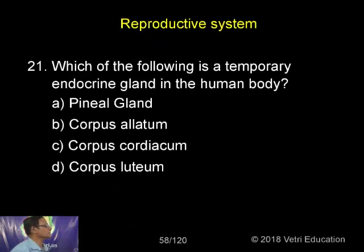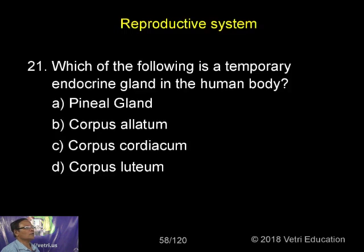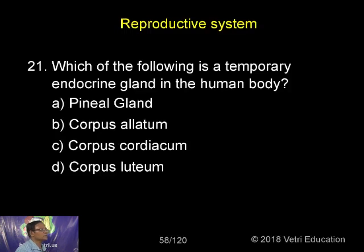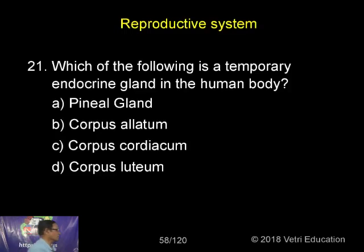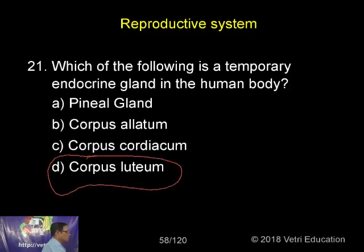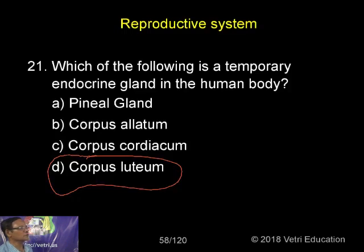Which of the following is a temporary endocrine gland in the human body? If pregnancy occurs, the empty follicle in the ovary gets converted into a transitory or temporary endocrine gland called corpus luteum. It is yellow in color — that is why it is called 'luteum' — a yellow body.